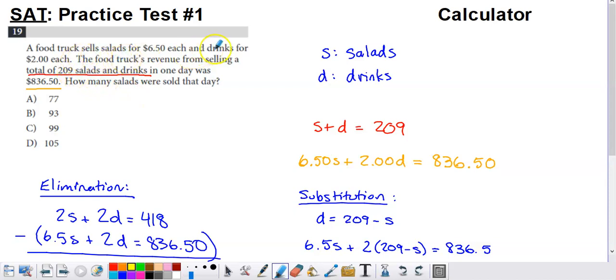So if you check out what we have going on, we're talking about a food truck that sells salads and drinks. It tells us the price of a salad is $6.50, the price of a drink is $2. Food truck's revenue from selling a total of 209 salads and drinks, so 209 total items sold in one day, got them this much money, $836.50. How many salads were sold that day?